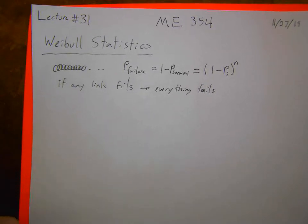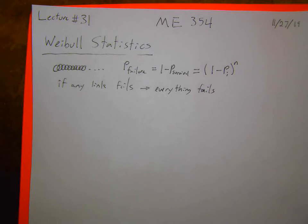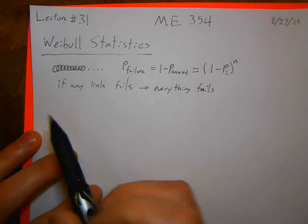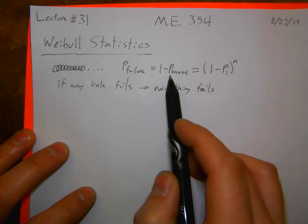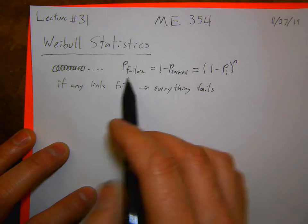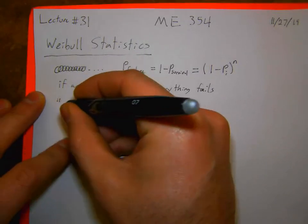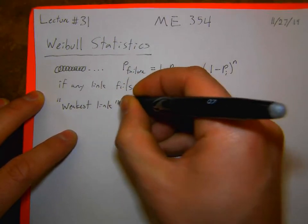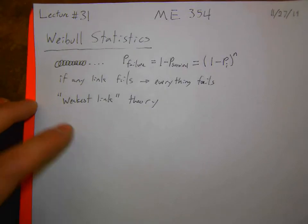We can write this out mathematically using probabilities. In brittle materials, the same type of idea applies. If any link in here fails, the whole thing fails — this is the weakest link theory. In brittle materials, the same concept applies.